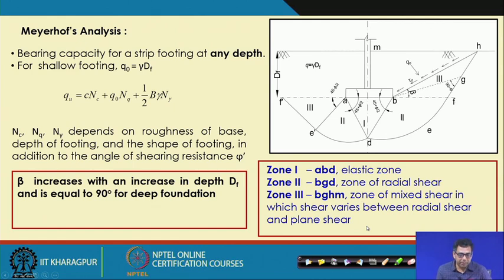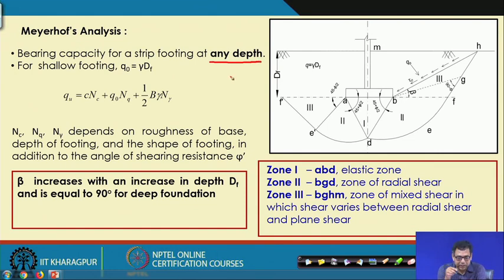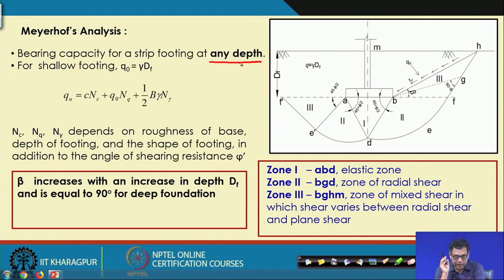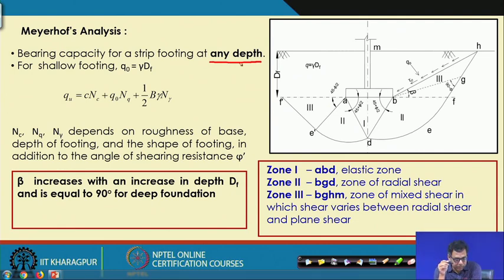The next theory is Meyerhof's bearing capacity theory, which can also be used for any depth. An important advantage of Meyerhof's analysis is that the bearing capacity factors N_c, N_q, and N_gamma depend not only on the angle of shearing resistance phi, but also on the roughness of the footing base, the depth of the footing, the shape of the footing, and the inclination of the loading.